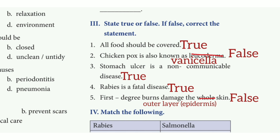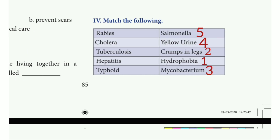4th one: Rabies is a fatal disease — the answer is true. 5th one: First degree burns damage the whole skin — the answer is false. Match the following. 1st one: Rabies — the answer is hydrophobia.